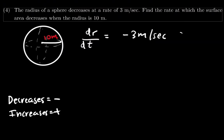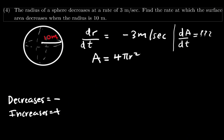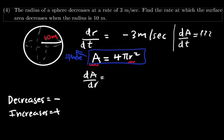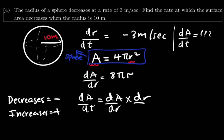To find the rate at which the surface area decreases, we know the surface area of a sphere is 4 pi r squared. We derive the area with respect to the radius: dA over dr equals 8 pi r. We know dA over dt equals dA over dr multiplied by dr over dt. Substituting: dA over dr is 8 pi r, and dr over dt is negative 3 meters per second.